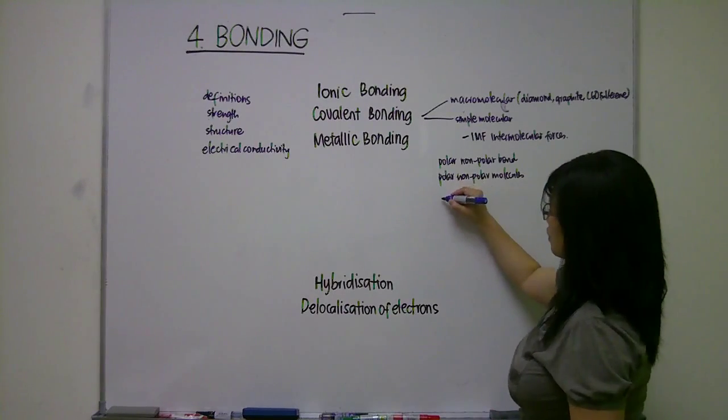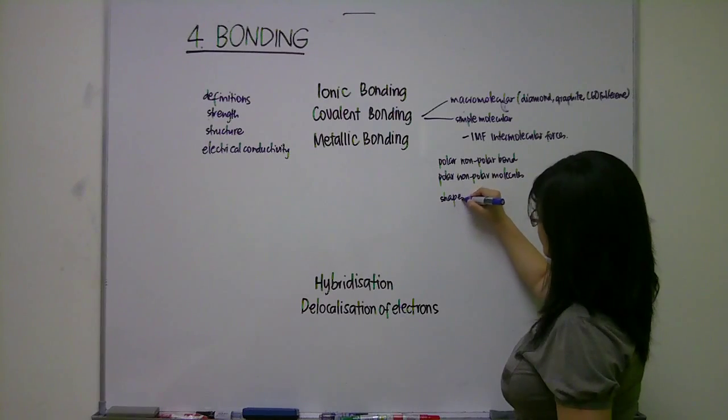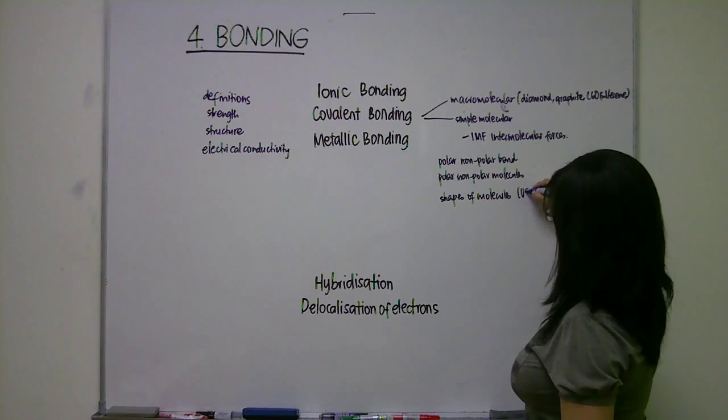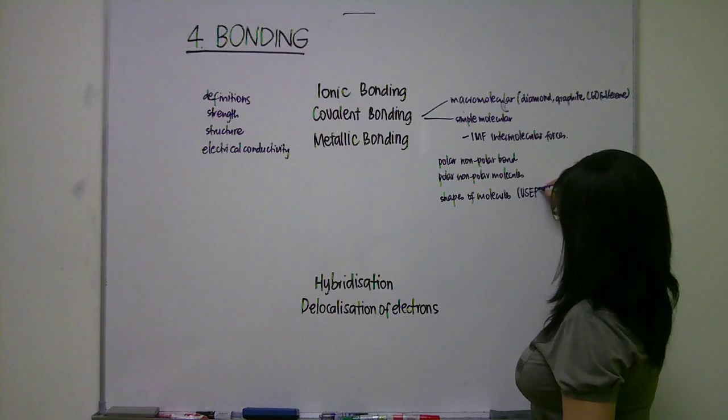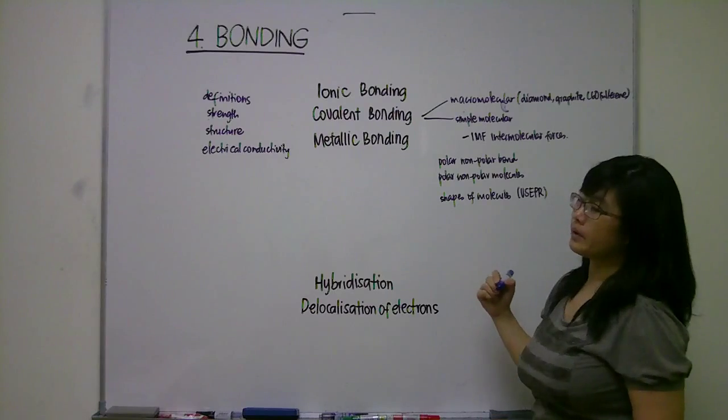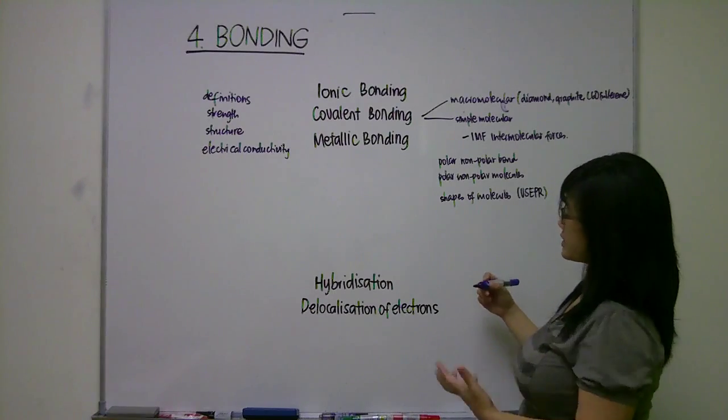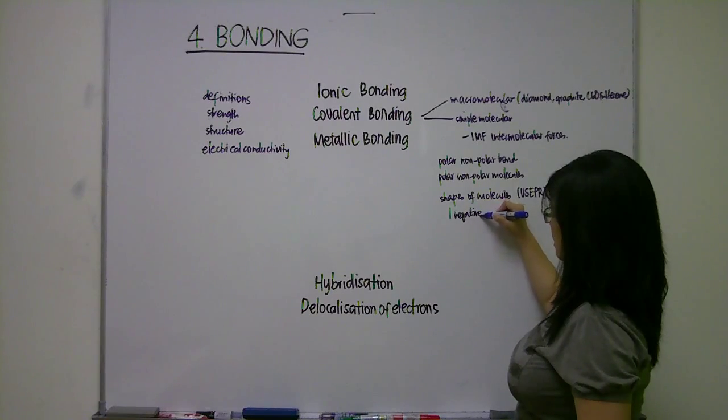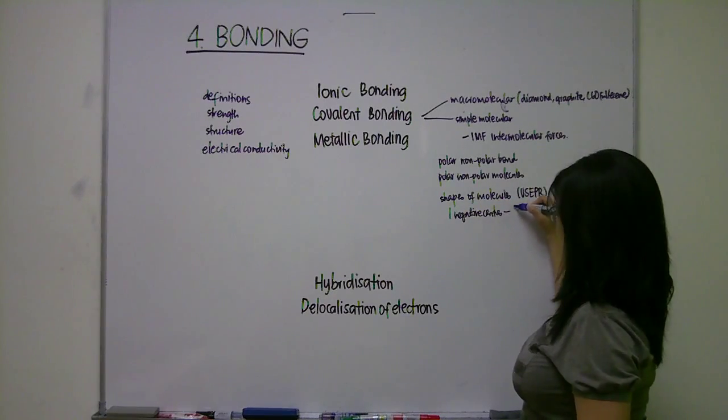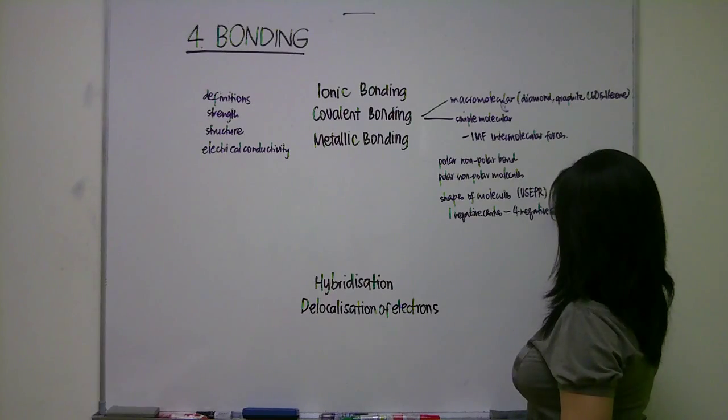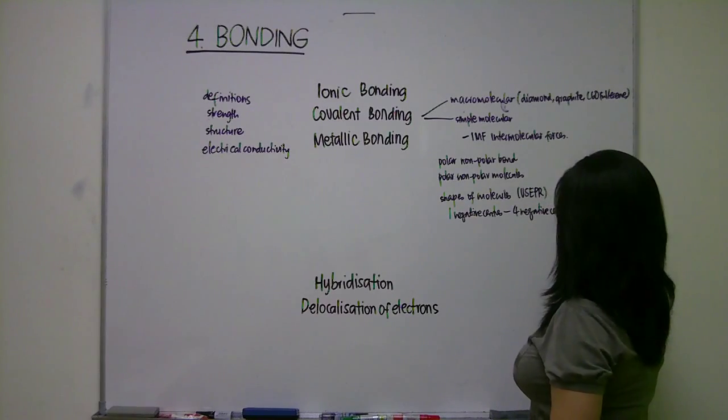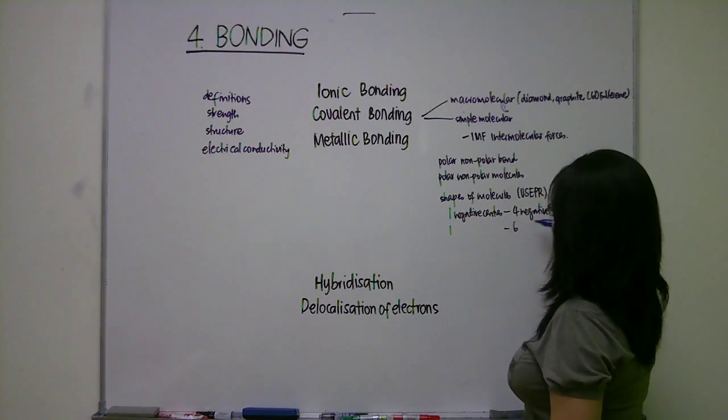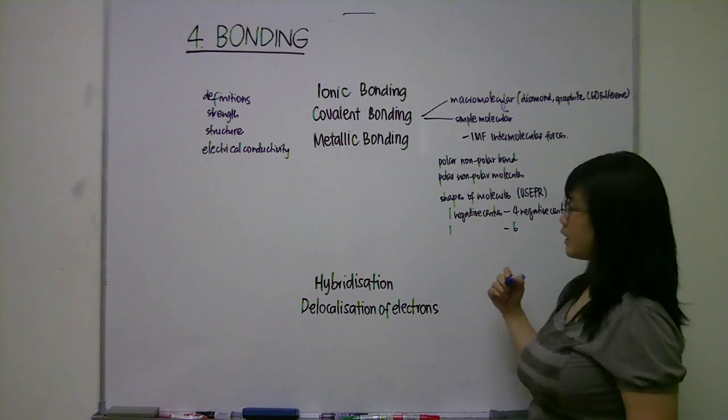Then also you need to be talking about the shapes of molecules. So in here, we are going to be discussing about the VSEPR theory. So for the SL, it will be from one negative centers to four negative centers, and one to six for HL.